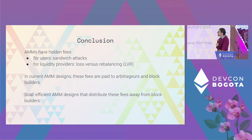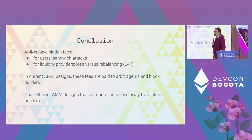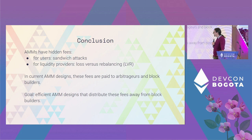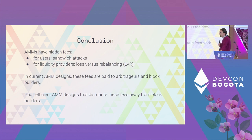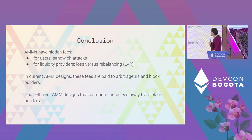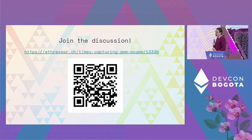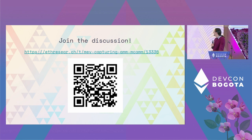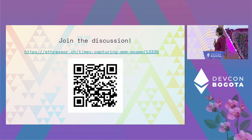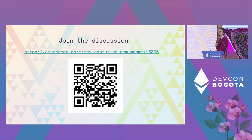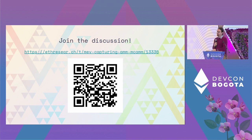In conclusion, AMMs have hidden fees because of MEV, both for users and for liquidity providers. In current designs, these fees go to arbitrageurs and block builders. However, we can do better and try to design AMMs in a way that distributes fees differently — and this is what I hope to transmit with this talk. All of this is work in progress. I would invite you, if you're interested, to join the discussion. Any opinion is welcome. If you are building an AMM, please extract all the MEV.